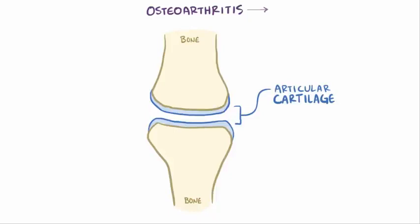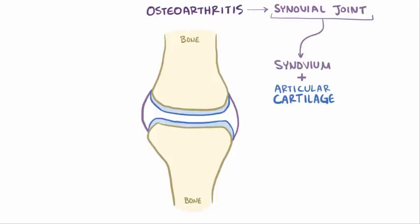With osteoarthritis, we're really talking about one particular kind of joint, which is a synovial joint. Along with articular cartilage, another important component of synovial joints, and where they get their name from, is the synovium, which along with the surface of articular cartilage forms the inner lining of the joint space.